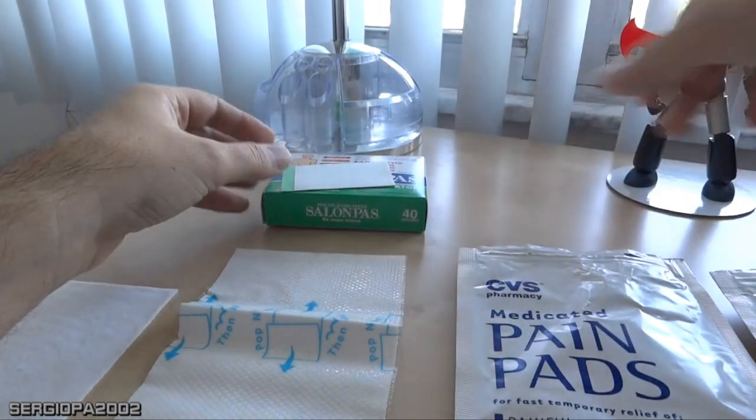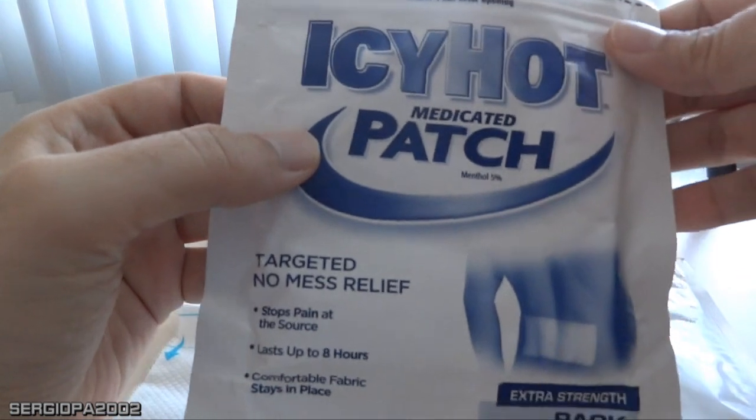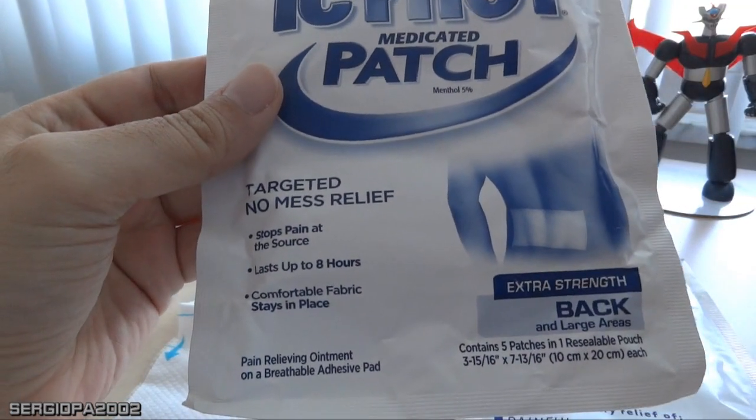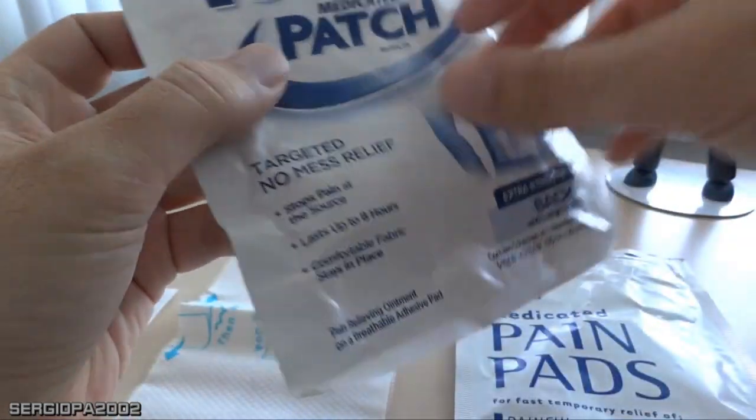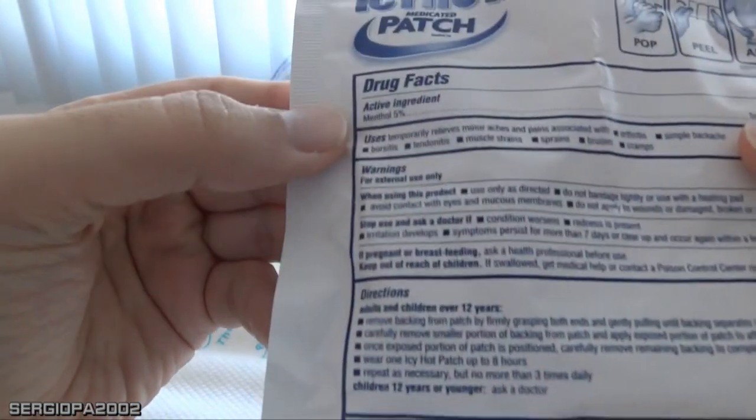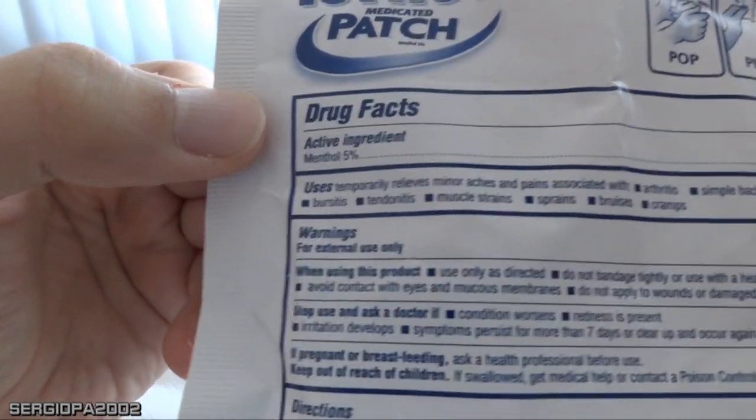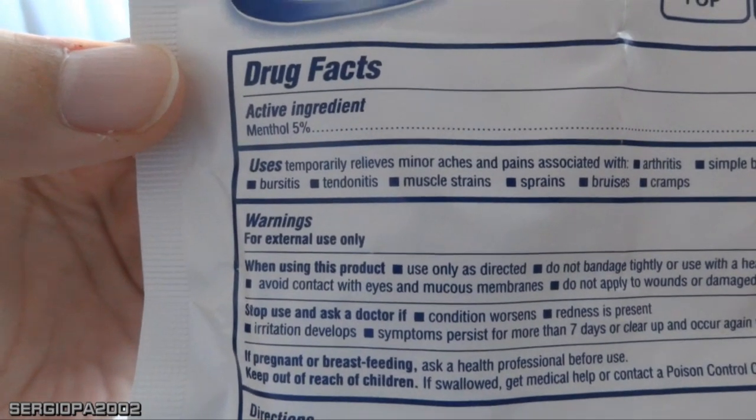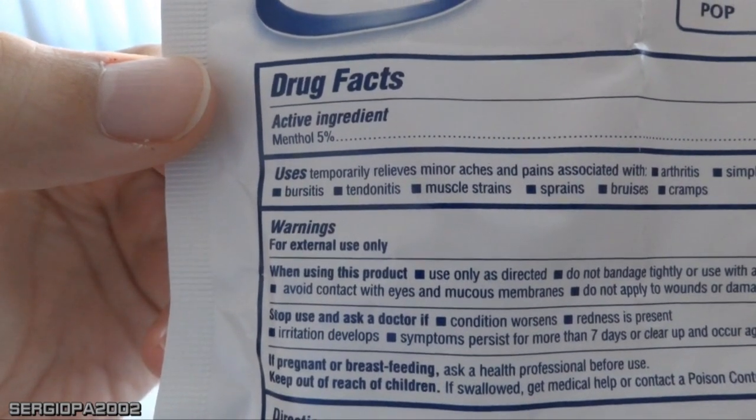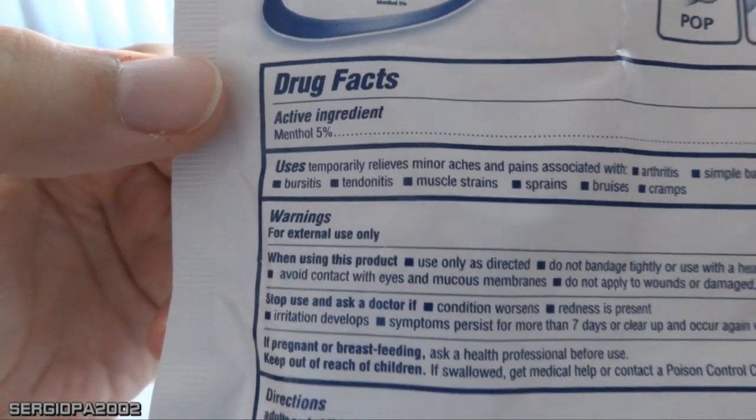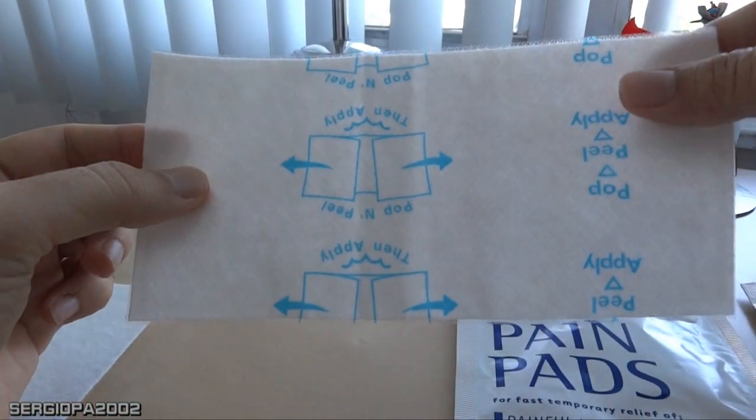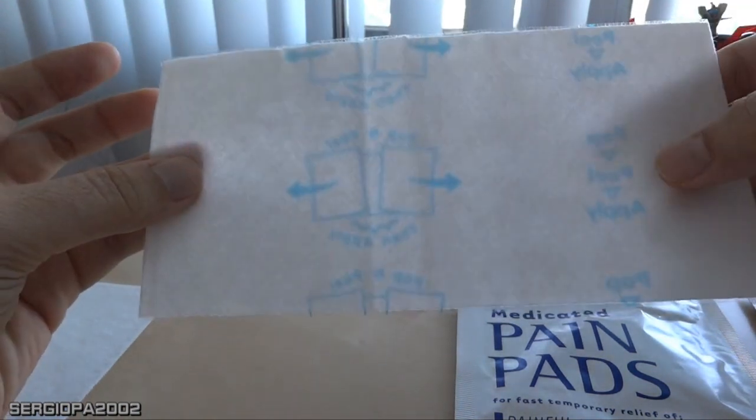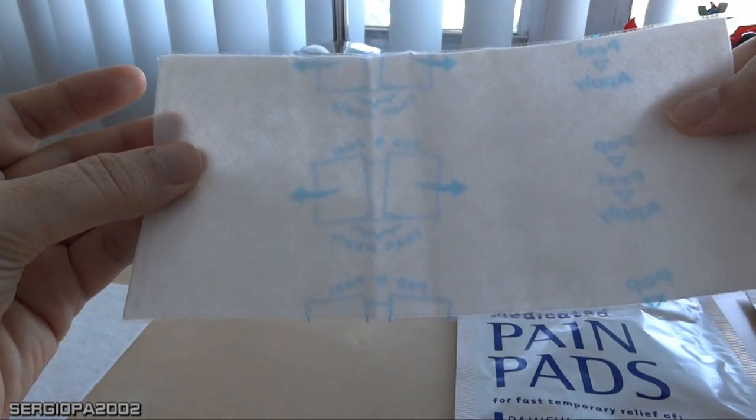Now the second thing I want to discuss is the Icy Hot medicated patch. These are good, and it's the opposite of the Salonpas—instead of being small, they are huge. Let me show you the ingredients so maybe I can save you a trip to the pharmacy. This only has menthol 5%. The patch is really big—it will cover your whole middle section or a side of your back.